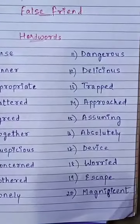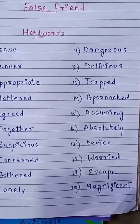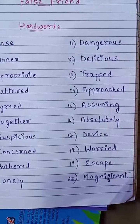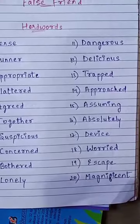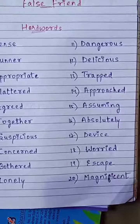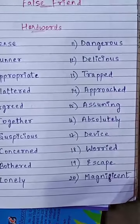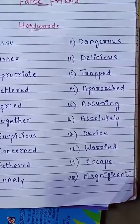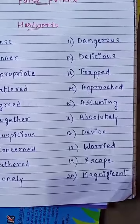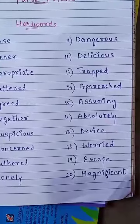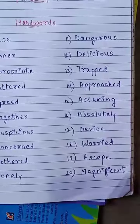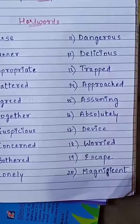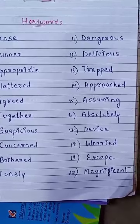Eleventh, dangerous, d-a-n-g-e-r-o-u-s, dangerous. Twelfth, delicious, d-e-l-i-c-i-o-u-s, delicious. Thirteenth, trapped, t-r-a-p-p-e-d, trapped. Fourteenth, approached, a-p-p-r-o-a-c-h-e-d, approached. Fifteenth, assuming, a-s-s-u-m-i-n-g, assuming. Sixteenth, absolutely, a-b-s-o-l-u-t-e-l-y, absolutely. Seventeenth, device, d-e-v-i-c-e, device. Eighteenth, worried, w-o-r-r-i-e-d, worried. Nineteenth, escape, e-s-c-a-p-e.